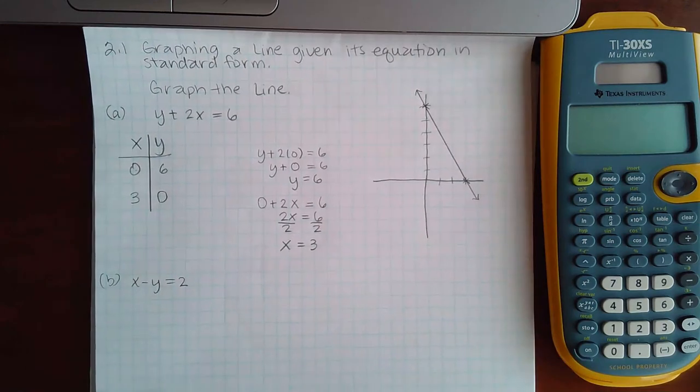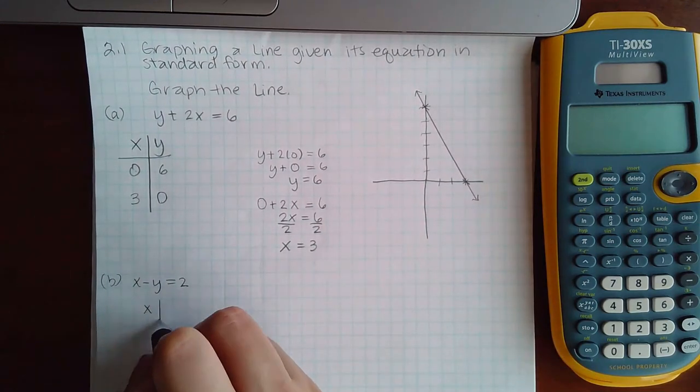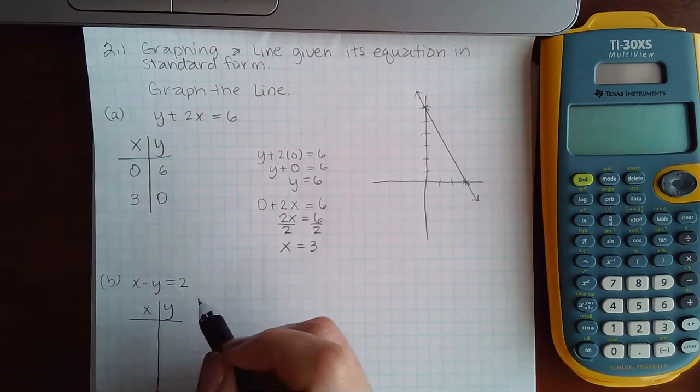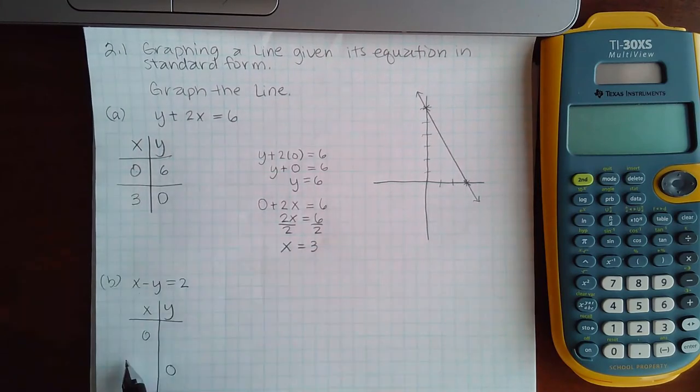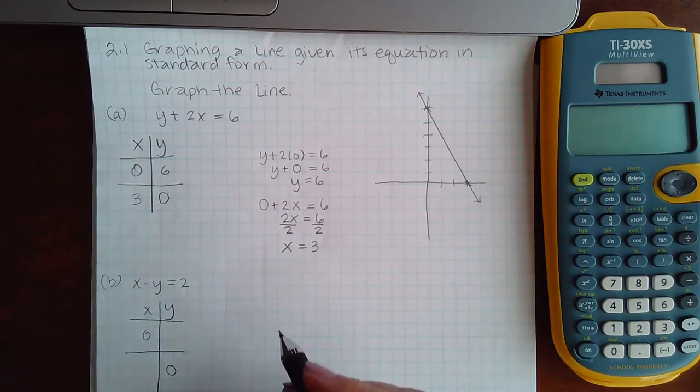Now here it's the same thing. So if I have x and y I'm going to plug in 0 for x and then 0 for y. If it helps keep it straight, put a line in between.